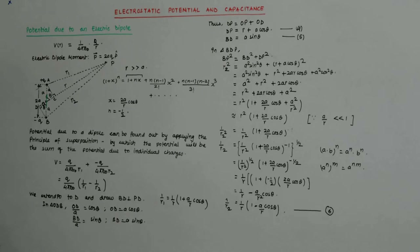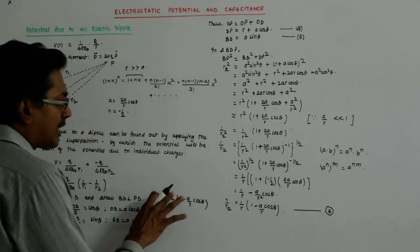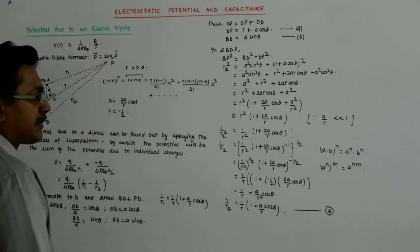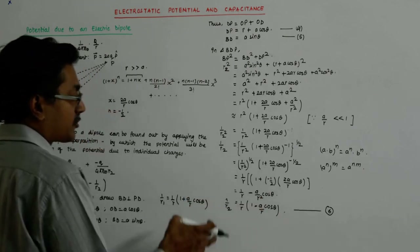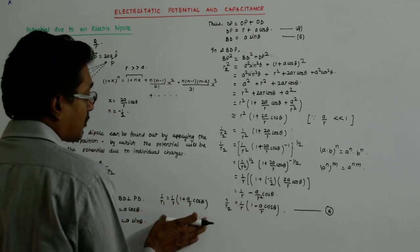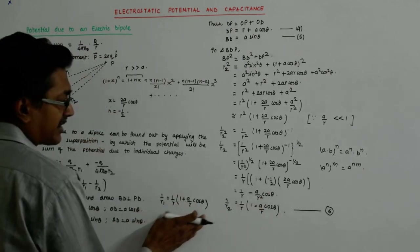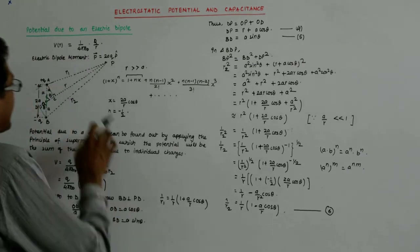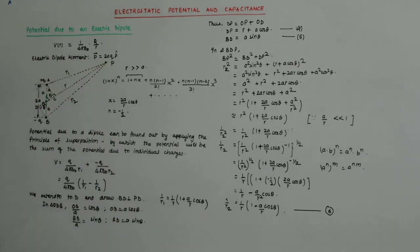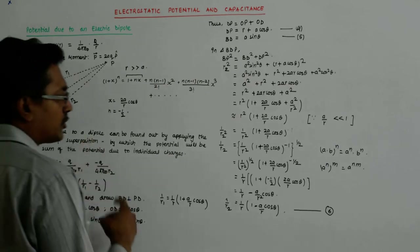And you will find a wonderful thing: 1 upon r1 is 1 upon r plus a upon r squared cos theta, while 1 upon r2 is 1 upon r minus a upon r squared cos theta. This tells us that 1 upon r1 is greater than 1 upon r2, which is indeed the case from the diagram.